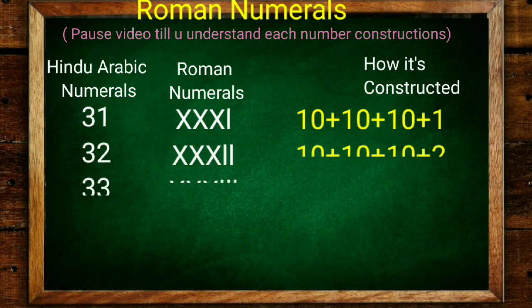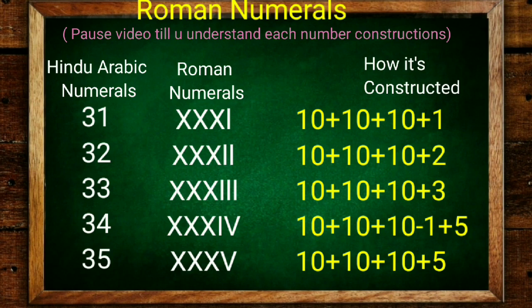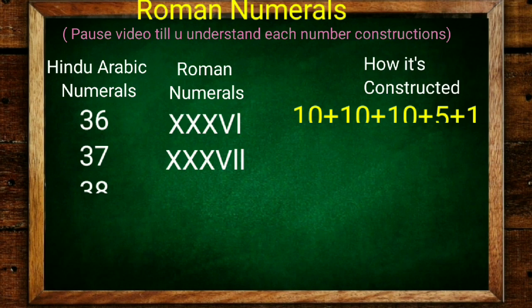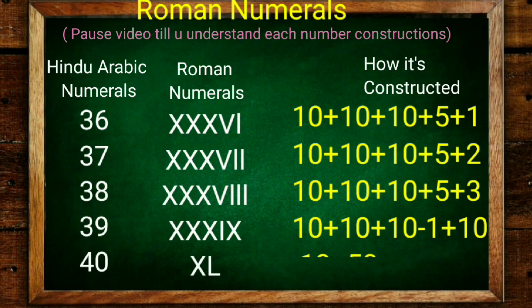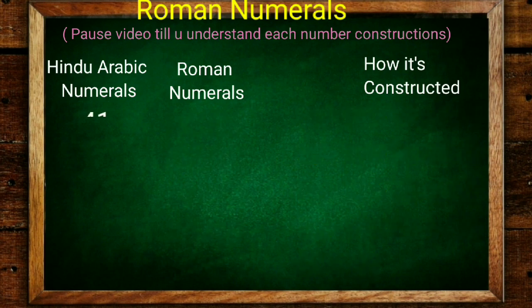31 is 30 plus 1, 32, 33 - simple. 34 is 30 minus 1 is 29 plus 5, and 35 is 30 plus 5 (10 plus 10 plus 10 plus 5). It's easy, no? 36 is 30 plus 5 plus 1, 37 is 30 plus 5 plus 2, 38 is 30 plus 5 plus 3. 39 is 30 minus 1 is 29 plus 10. 40 is important: 50 minus 10. Here we got a new digit - that is L, which is 50.